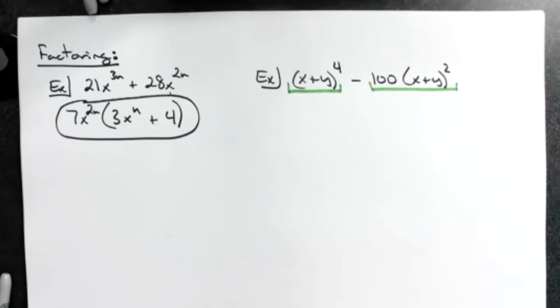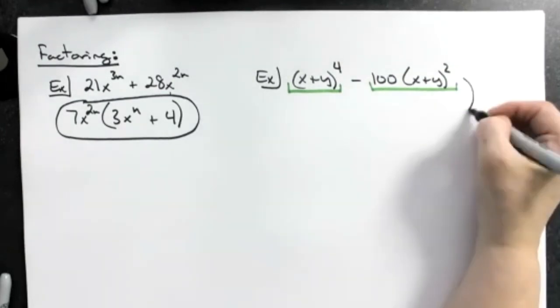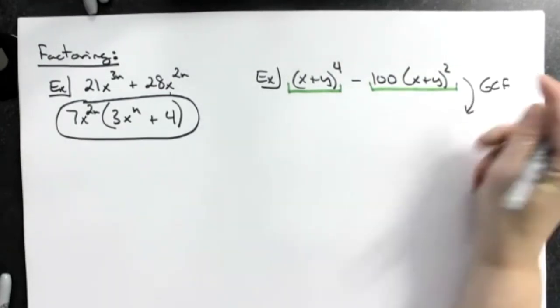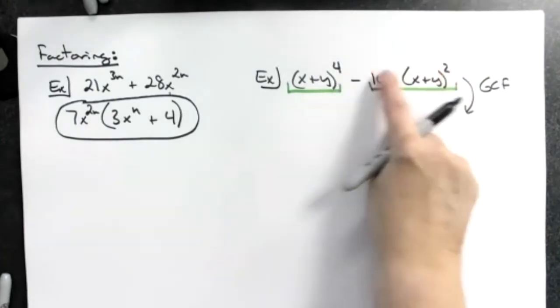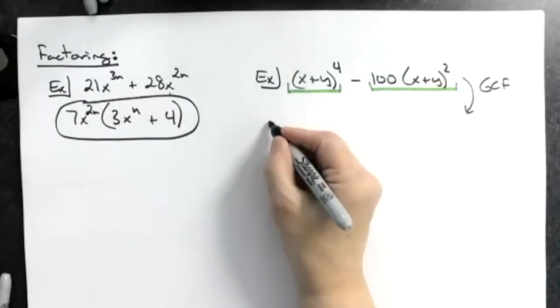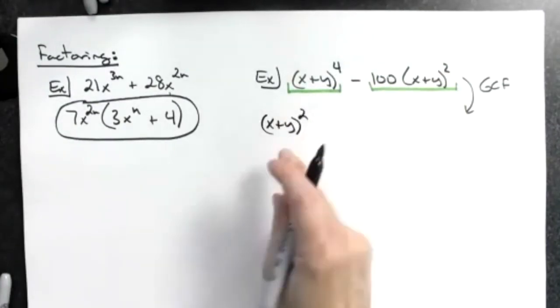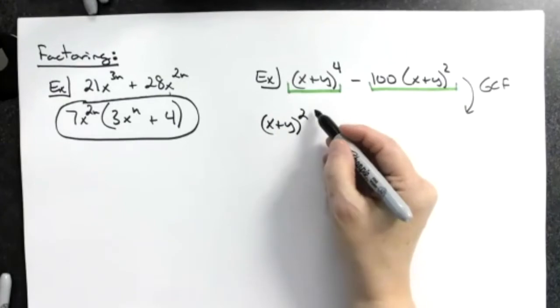So for my first step, about the only thing I can do is take out a greatest common factor. So I'm going to look for that greatest common factor, and it's going to be a binomial. We did factor out binomials. Again, picking that smallest exponent. So an x plus y to the second power. That's my greatest common factor.